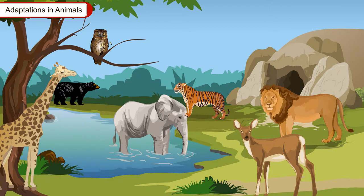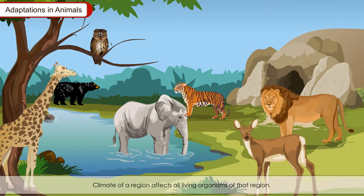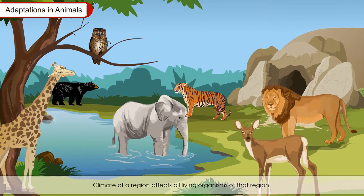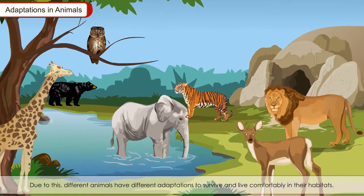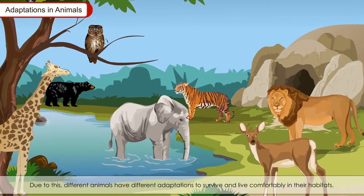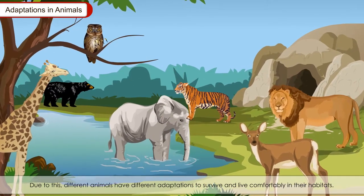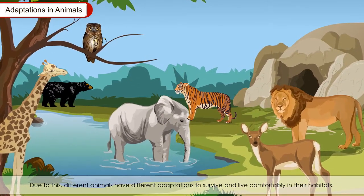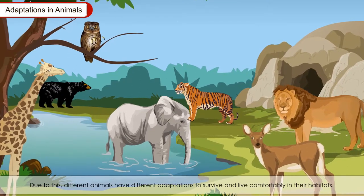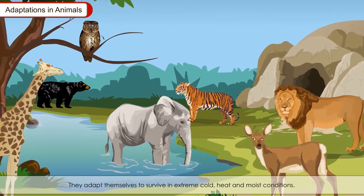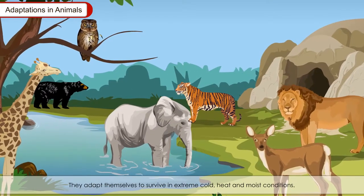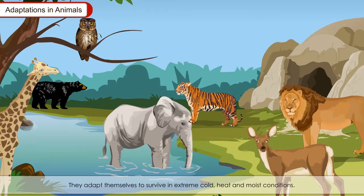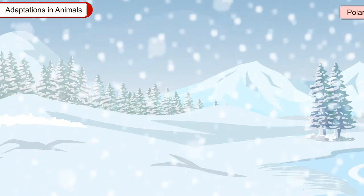Adaptations in animals: The climate of a region affects all living organisms of that region. Due to this, different animals have different adaptations to survive and live comfortably in their habitats. They adapt themselves to survive in extreme cold, heat and moist conditions.